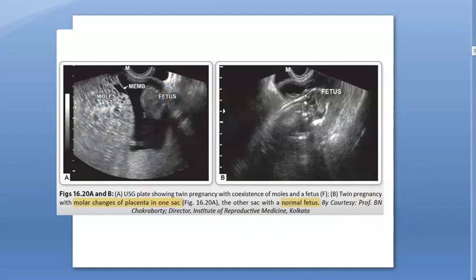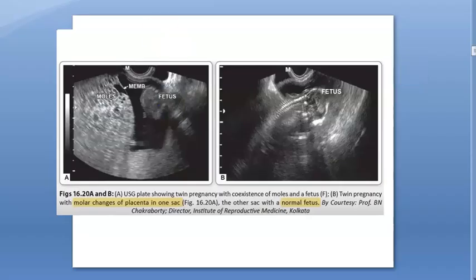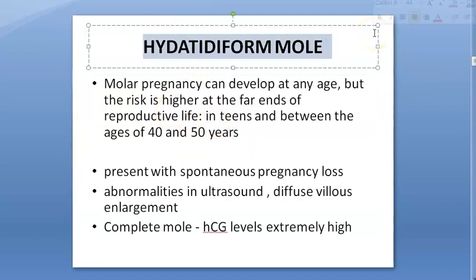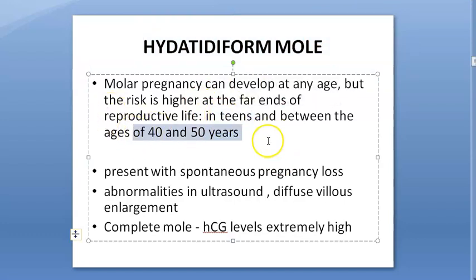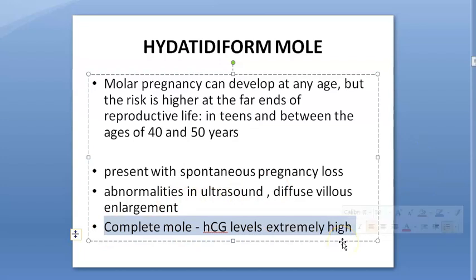For a placental tumor you need a placenta from pregnancy — normal or abnormal. Hydatidiform mole from abnormal fertilization is more likely in teenagers or women aged 40 to 50 years. Because there is a placenta, HCG — human chorionic gonadotropin — levels will be very high, since the placenta is overactive and tumorous.